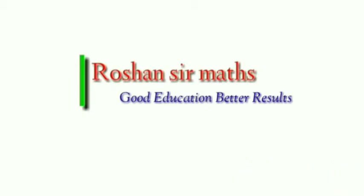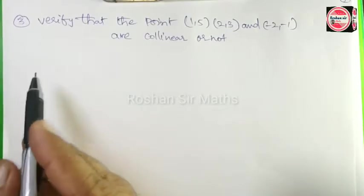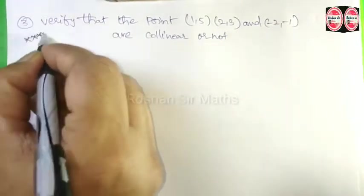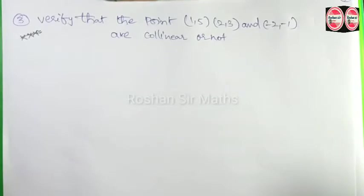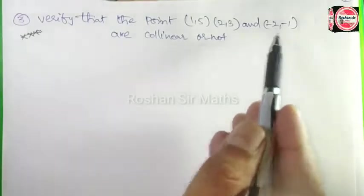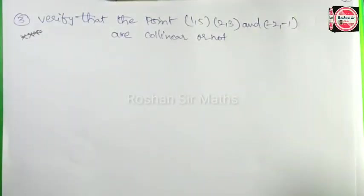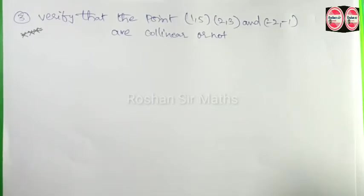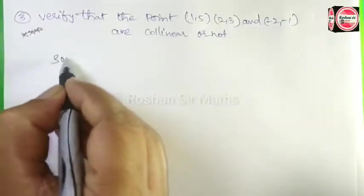Hello students, welcome to my channel. This is Roshan Sir. The third question given is: verify that the points (1,5), (2,3), and (-2,-1) are collinear. We have read in the introduction that to check collinearity using distances, any two sides must add up to the third, or if using area of triangle, the answer must be 0.